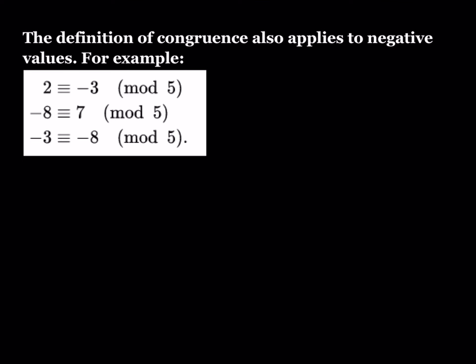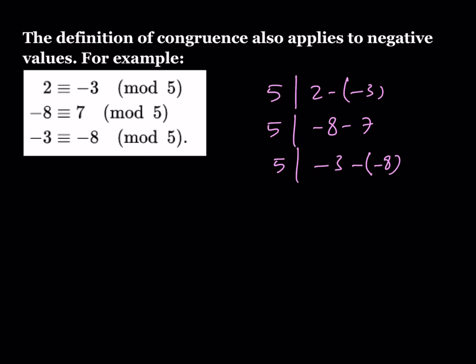The definition of congruence also applies to negative values. For example: 2 is congruent to negative 3 mod 5; negative 8 is congruent to 7; and negative 3 is congruent to negative 8. All these statements are true. You can check by verifying that 5 divides 2 minus negative 3, 5 divides negative 8 minus 7, and 5 divides negative 3 minus negative 8. Negative values are very helpful and I'll show you examples where they're extremely useful.